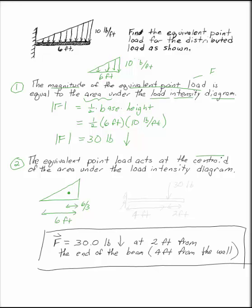So what I can say at this point is that my beam has an equivalent. The beam has a distributed load. The equivalent point load to the distributed load is thirty pounds at two feet from the end of the beam.